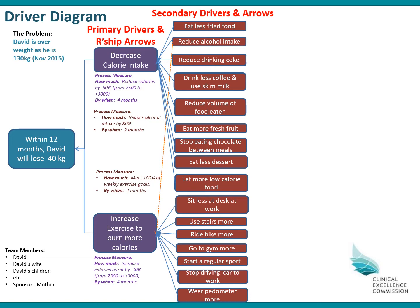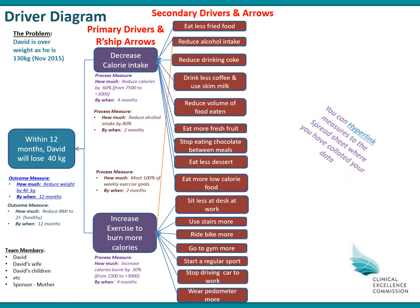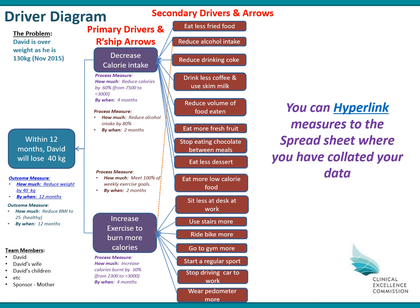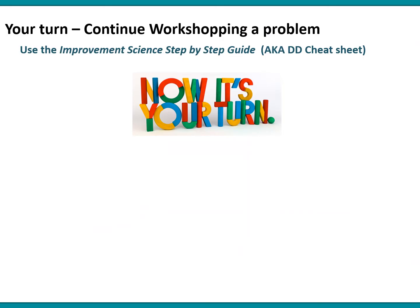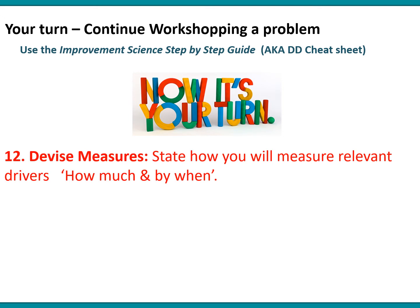Another process measure might be that he meets 100% of his exercise goals each week within two months. Some outcome measures include reducing weight in kilos — his main aim — and reducing his BMI to 25. You can hyperlink some of these measures through to an Excel spreadsheet from the PowerPoint presentation where the driver diagram sits. This is the final driver diagram with all the outcome, process, and balancing measures David and his team have devised. Now it's your turn to workshop: find your driver diagram cheat sheet and look at step nine. Look at each primary driver and work out if there's anything you can measure, thinking about how much improvement you want and by when, and document that. Also look at your secondary drivers and see if there's anything to measure.